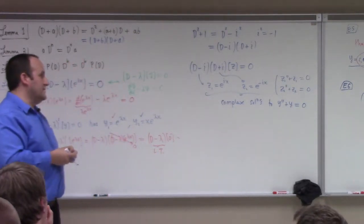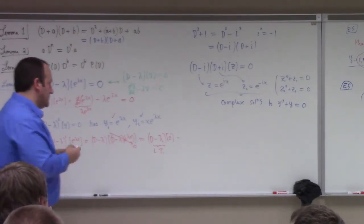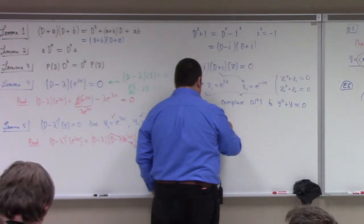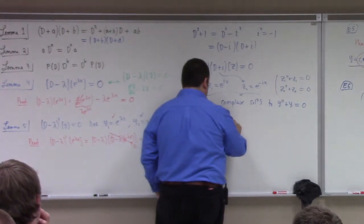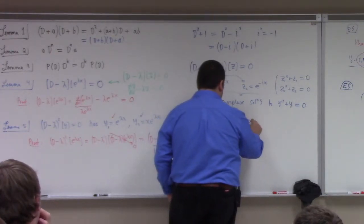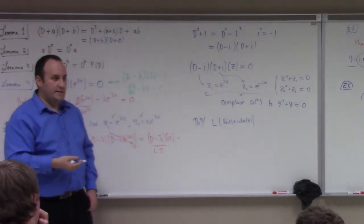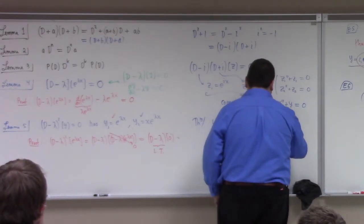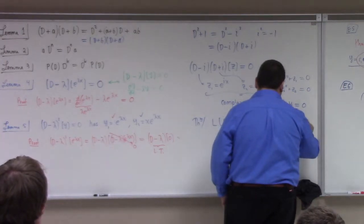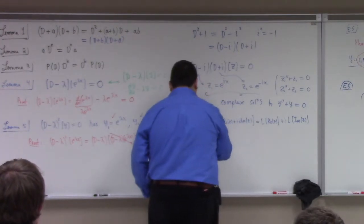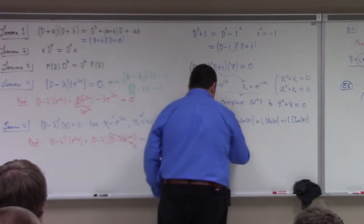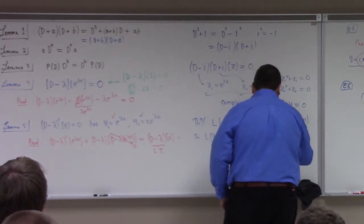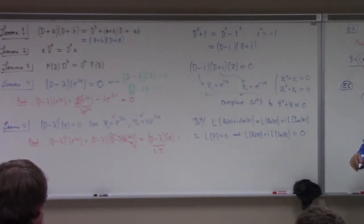So how do we bridge the gap? There's a theorem we should use. If I have a linear transformation L acting on the real part of z plus i times the imaginary part of z, by linearity that equals L of the real part of z plus i times L of the imaginary part of z. So if L of z equals zero, then L of the real part of z plus i times L of the imaginary part of z equals zero.